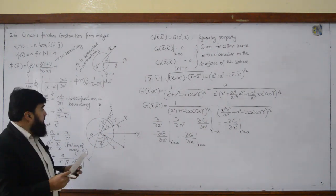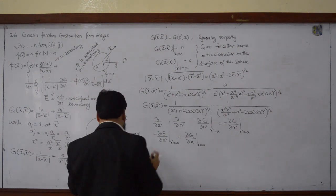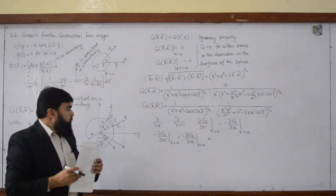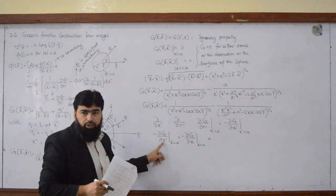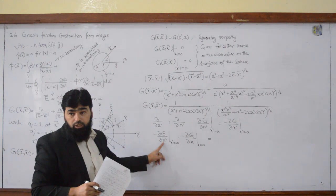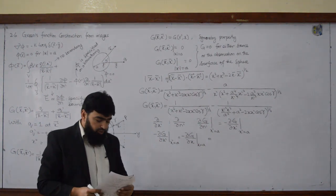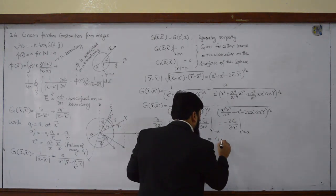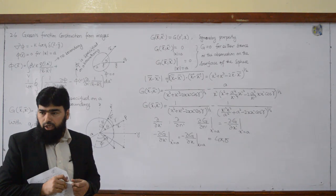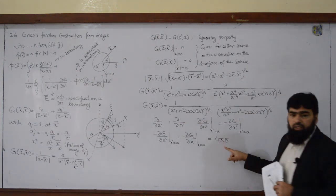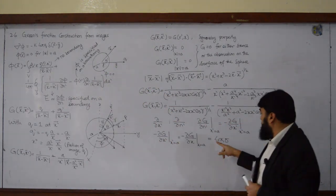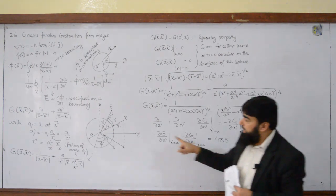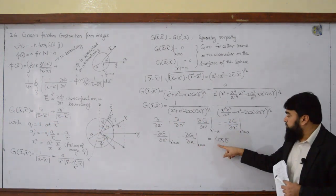Both will be the same because of symmetry. And what this will give you — when you differentiate the potential, the space derivative of potential is the electric field. So this is the electric field, and this electric field was calculated earlier; it was equal to 4 pi sigma — the induced charge. So 4 pi sigma.